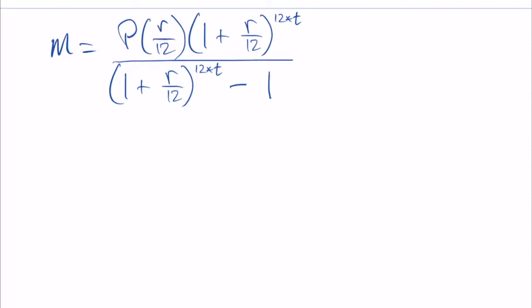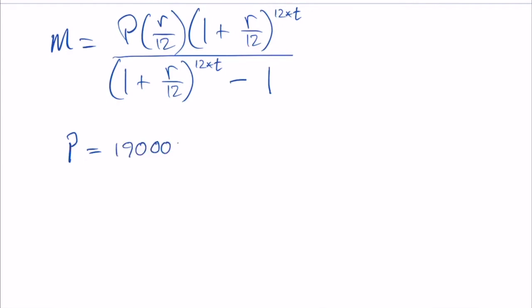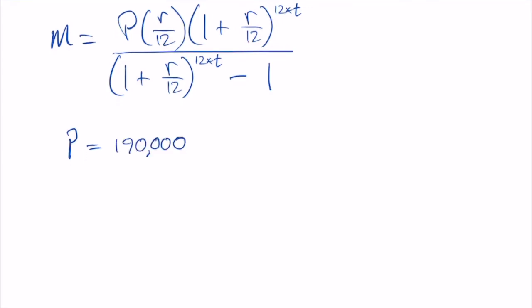Heather wants to buy this home and she knows that she needs to borrow $190,000. That is our principle. That's what P is going to be, $190,000, that's how much is being borrowed.